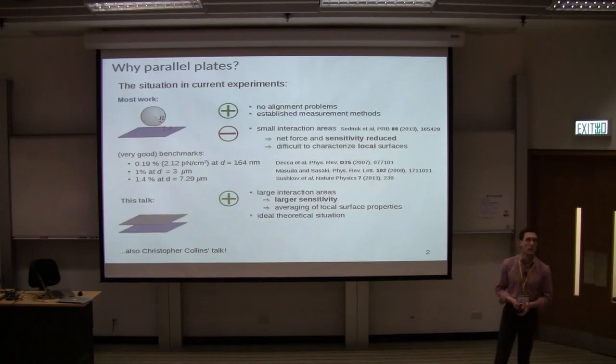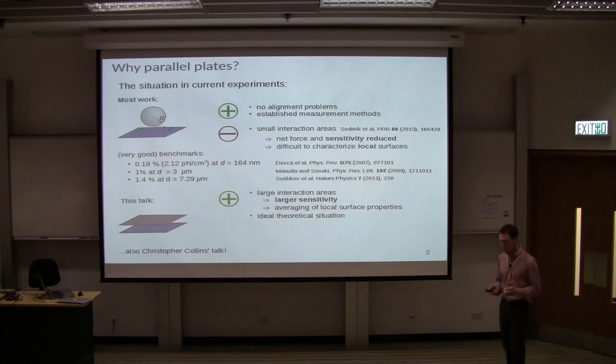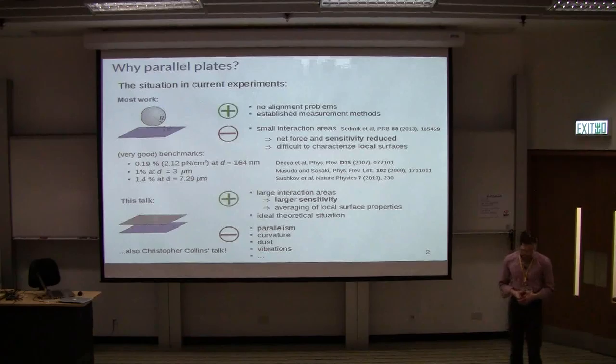For example, the patch potential, as has been also published by Bionin and others, is averaged out, so you have less problems with these kind of interactions. And, of course, it's also quite an ideal theoretical situation, so this is rather close to what you have in the derivation of the ideal Casimir effect, parallel slabs, so you come quite close to that.